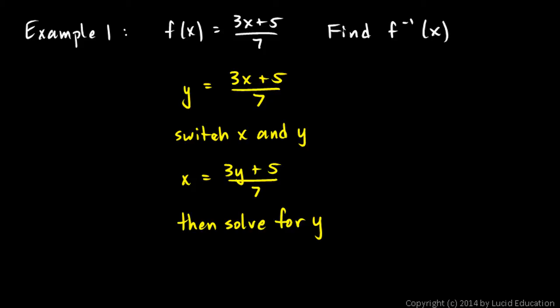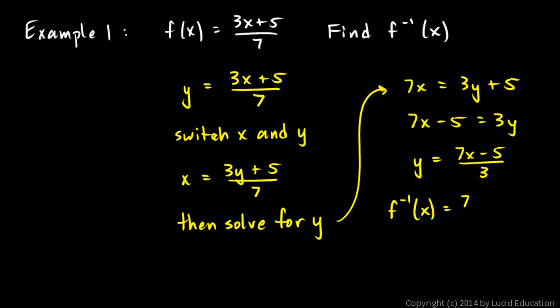So then solve for y. What I get when I solve this for y will be the inverse of my original function. I'm going to multiply both sides by 7. And I get 7x equals 3y plus 5. This is just routine algebra here. So 7x minus 5 equals 3y, so y is going to equal 7x minus 5 over 3. That is the inverse of the original function.